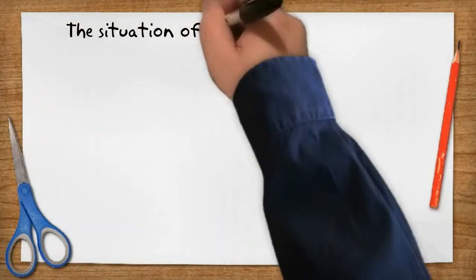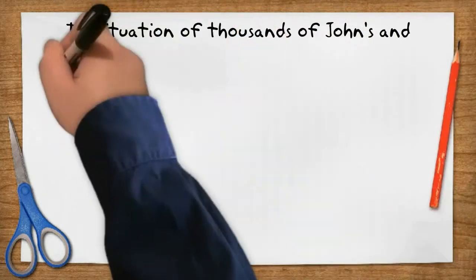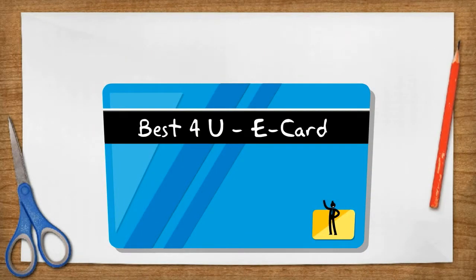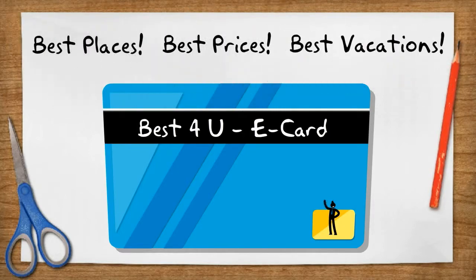Well now the situation of thousands of Johns and Jennys and hundreds of Juans has been solved. Best for you e-card. Best places, best prices, best vacations.